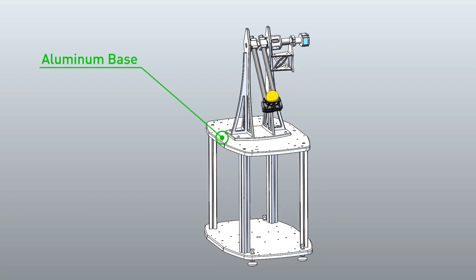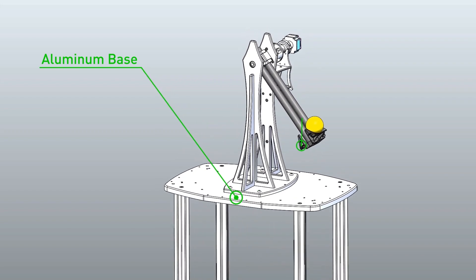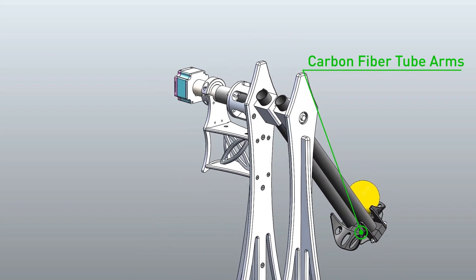The system consists of a primary aluminum base structure, lightweight rigid carbon fiber tube arms, and a plastic 3D printed backstop.